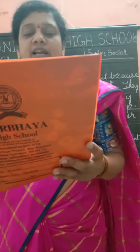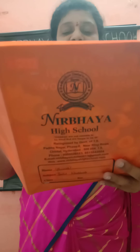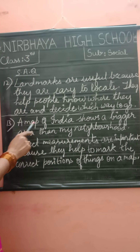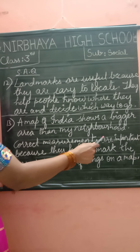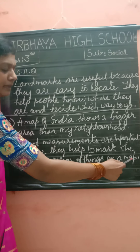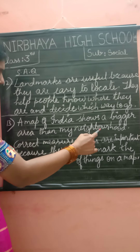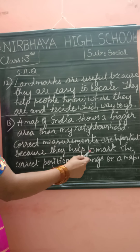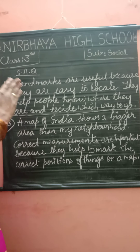How is a map of India different from the map of our neighborhood? State a reason why correct measurements are important while making maps. Answer: a map of India shows a bigger area than my neighborhood. Correct measurements are important because they help to mark the correct positions of things on a map.